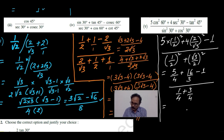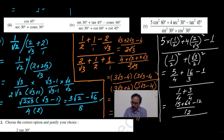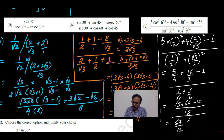If we take the LCM, 12 is the LCM. 4 times 3's are 15, then 3 fours are 64, minus 12. This is 1 plus 3, which is 4 by 4, equal to 1. When we simplify, 15 minus 12 is 3, and if 3 is added to 64, we get 67 by 12 as the final answer. In all these problems, we are simply substituting the values and then simplifying.